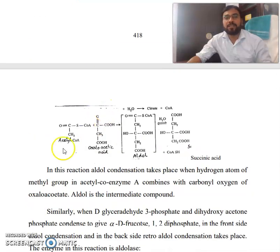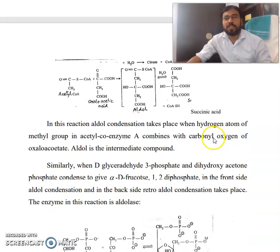Look at this. This is acetyl coenzyme A, this is oxaloacetic acid, and this is the aldol and coenzyme SH and succinic acid. So in this reaction aldol condensation takes place when hydrogen atom of methyl group in acetyl coenzyme A combines with the carbonyl oxygen of oxaloacetic acid. Aldol is the intermediate compound.